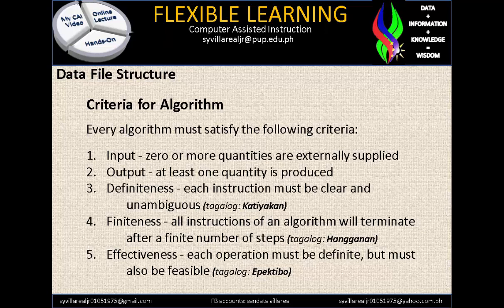Input: zero or more quantities are externally supplied — even zero is classified as an input. Output: at least one quantity is produced. Definiteness: each instruction must be clear and unambiguous — every problem needs to be clearly defined and solvable. Finiteness: all instructions of an algorithm will terminate after a finite number of steps — there should be an end to every solution we provide.